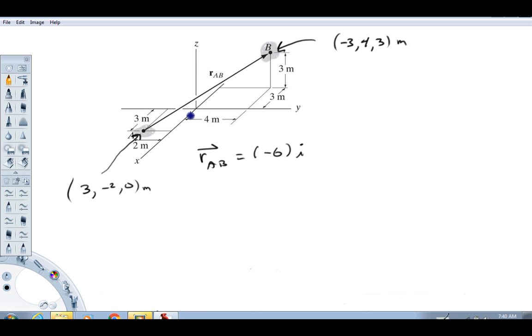All right, j component, we've got to go two units in the plus j, and then four more in the plus j. So that's going to be plus six j. And then k component, we've got to go three units up. So plus three k. Let's close that parenthesis off here. All right, and then this vector would have units of meters.